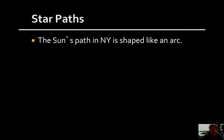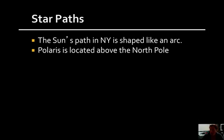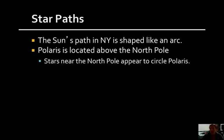Stars make paths through the sky. If you use a camera and take pictures every few minutes and put those pictures together in an image, you can see their motion through the sky, or their apparent motion, since it's really the Earth that's rotating. The sun's path in New York is always shaped like an arc. Polaris is always located above the North Pole, and stars near the North Pole appear to circle around Polaris. Since Polaris is lined up with the North Pole's axis, if we take pictures facing towards the North Pole, it will appear that all the stars circle Polaris.